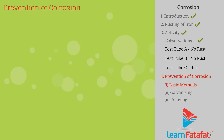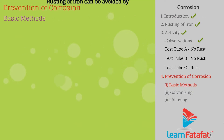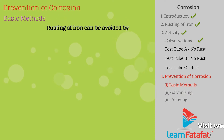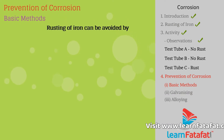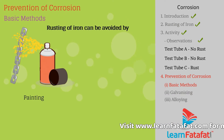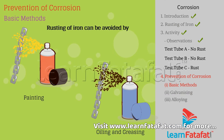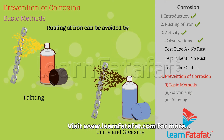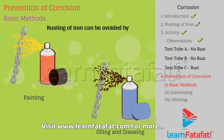Prevention of corrosion — basic methods. Rusting of iron can be avoided to some extent by painting, oiling, or greasing.